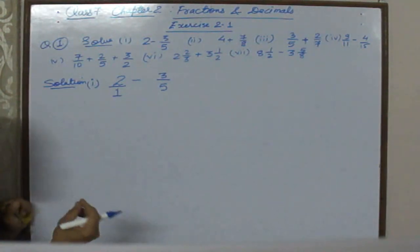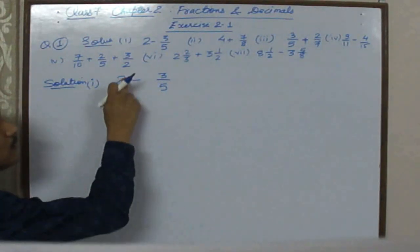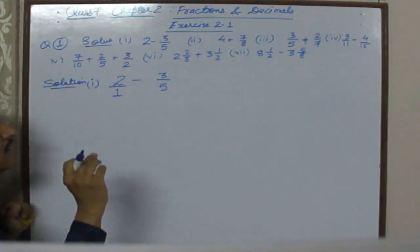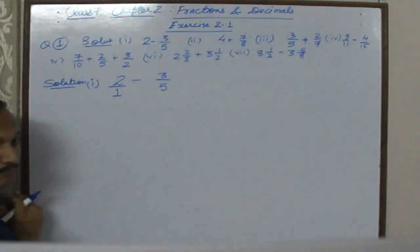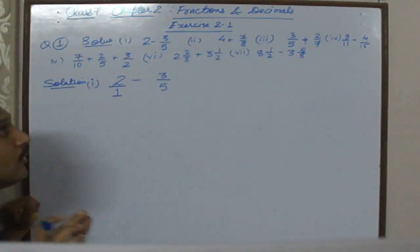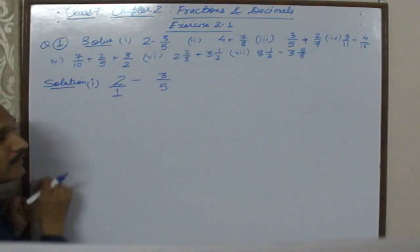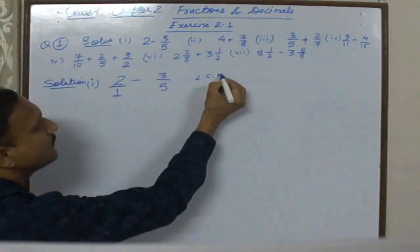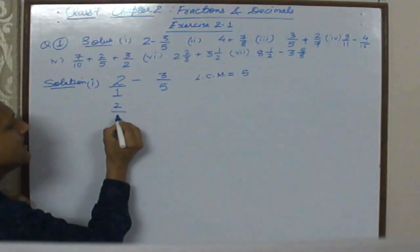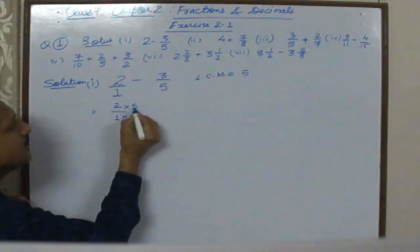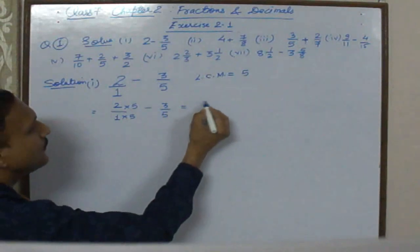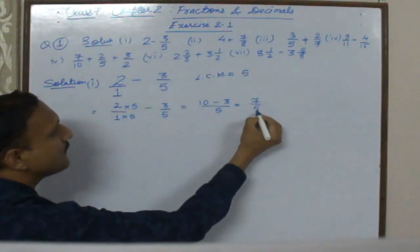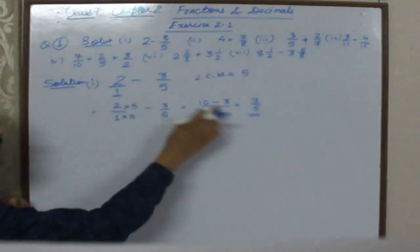Now the denominators are 1 and 5, which are not the same. We cannot add or subtract fractions until denominators are the same. So we take the LCM of 1 and 5, which is 5. Making denominators the same: 2 by 1 becomes 10 by 5. So 10 by 5 minus 3 by 5 equals 7 by 5. Therefore, 2 minus 3 by 5 equals 7 by 5.